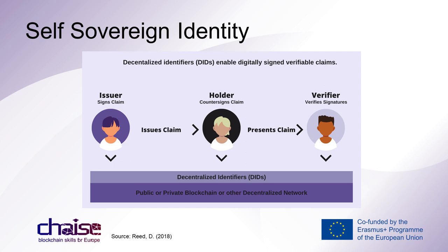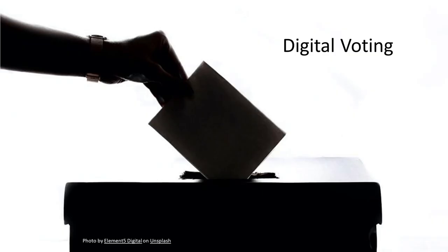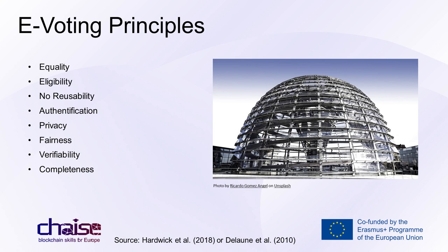Electronic elections — digital voting or e-voting — is another topic where blockchain technology can be used. There is no central authority, government, or administrative body that could control or manipulate the electronic voting process. Every citizen who takes part can verify whether their vote was counted, and all participants have access to voting results. The following principles are emphasized for e-voting: Equality — voting equality applies to all. Eligibility — only eligible voters can participate. No reusability — each eligible voter has exactly one vote. Authentication — the voter's identity can be clearly verified. Privacy — the secrecy of the vote remains protected. Fairness — no early partial results may be published. Verifiability and completeness — correctness can be verified individually and universally.